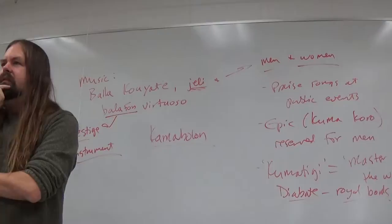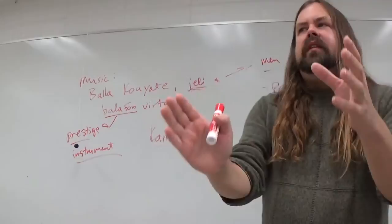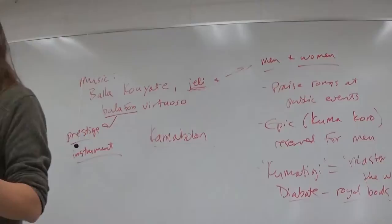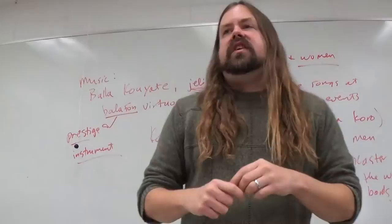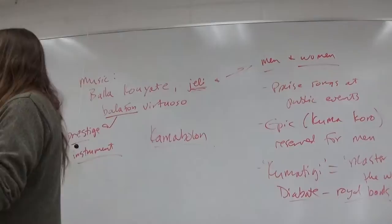But remember that the performance—this is a recording of a relatively recent performance of the epic. I think this was transcribed sometime in the 1990s. And the epic changes as time goes on. Once muskets are introduced into Africa, muskets start appearing in versions of the Sunjata story.